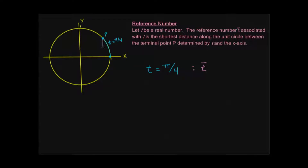It's very important to note that the distance is measured along the unit circle — not a straight-line distance across. I mean the shortest distance along the unit circle. In this case, the shortest distance along the unit circle from p to the x-axis is the same distance I already traveled. So t-bar is going to be π/4, which is the shortest distance between p and the x-axis.